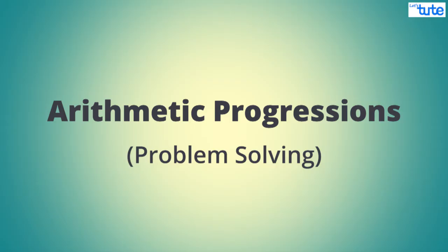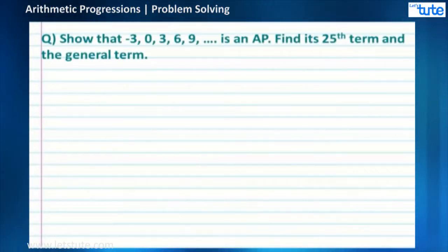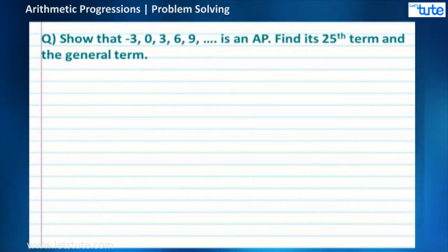Hi, in this video we will solve problems based on arithmetic progressions. Let us go ahead and solve the first question. Show that -3, 0, 3, 6, 9 and so on is an AP. Find its 25th term and the general term.